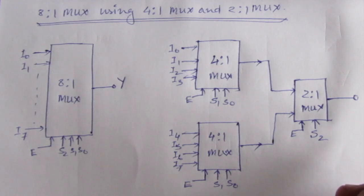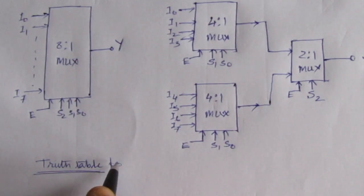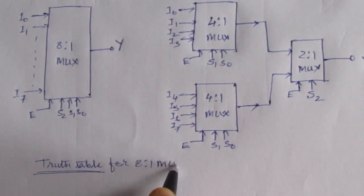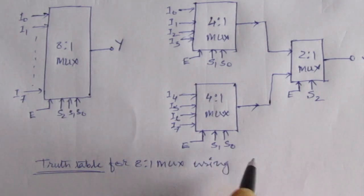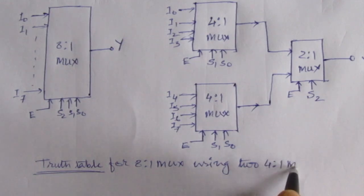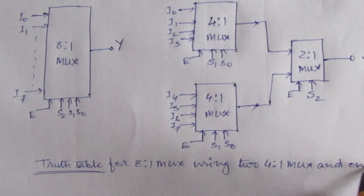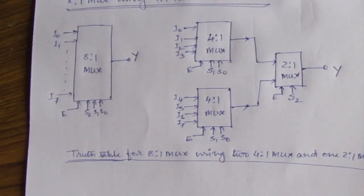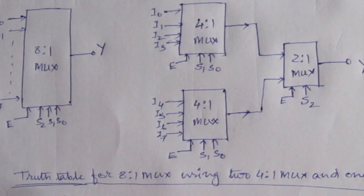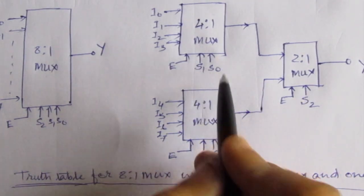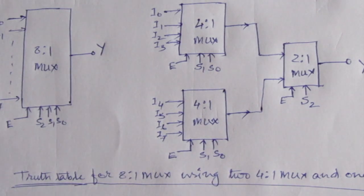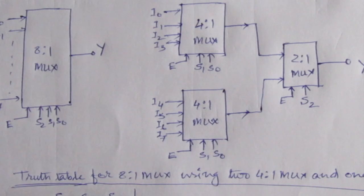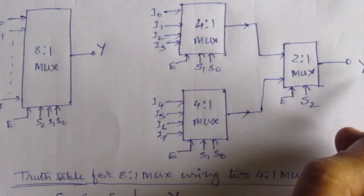We will make the truth table of the 8-to-1 multiplexer using two 4-to-1 multiplexers and one 2-to-1 multiplexer, and derive the equation for the output. We have three select lines: S2, S1, and S0 — where S1 and S0 are shared between the two 4-to-1 multiplexers. We have one output line Y.